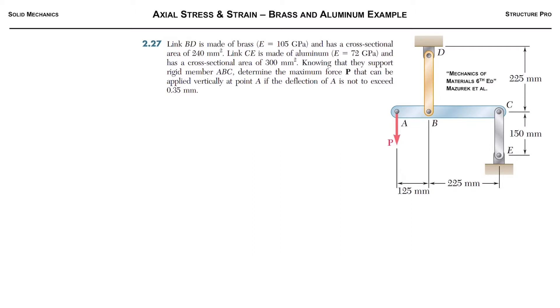We got this contraption here, and it's basically saying we got a force P pulling down on the rigid member ABC, and then we got this brass link and this aluminum link. We're given the details of the brass here, the modulus of elasticity and the area, and then the aluminum as well. We're asked to determine the maximum force P that can be applied if the deflection at A is not to exceed 0.35 millimeters.